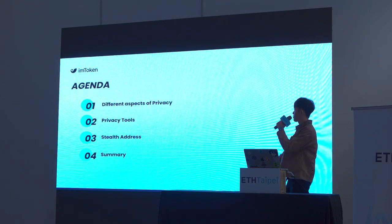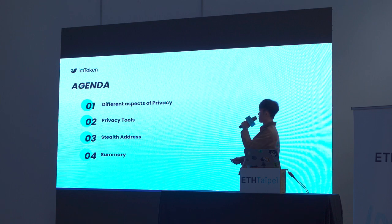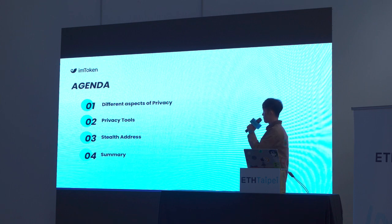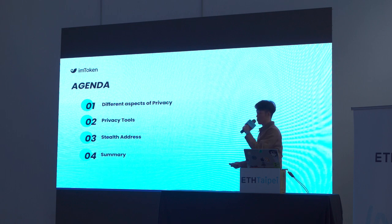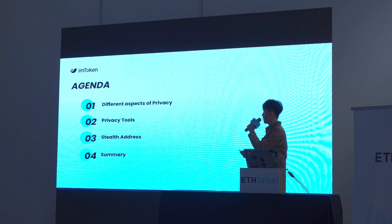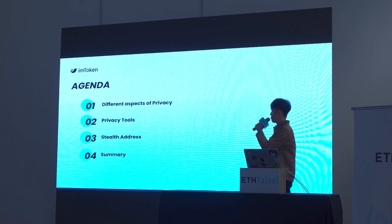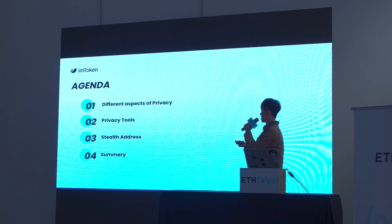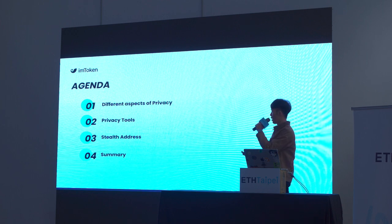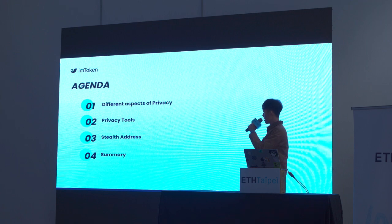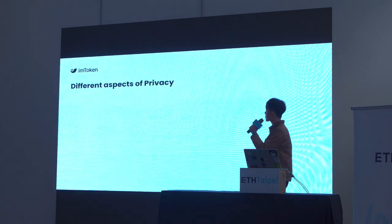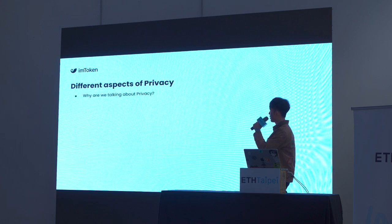Here's my agenda. I'll be separating my talk into four parts. The first one is different aspects of privacy — there are different aspects when we mention privacy. The second part is privacy tools, briefly going over some common privacy tools people use today to protect their on-chain privacy. The third is the main topic: stealth addresses — how they work at a high level, benefits, downsides, and challenges. The last part is a summary.